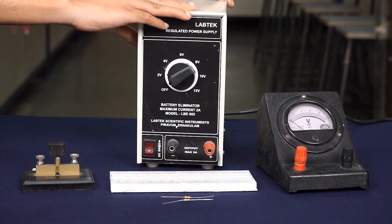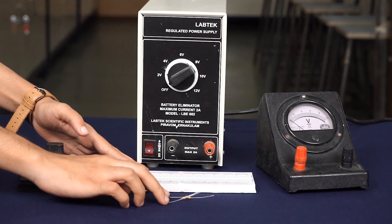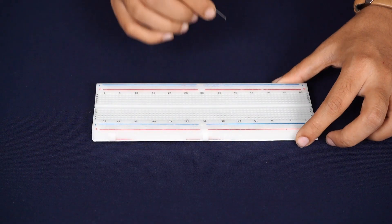Arrange cell, key, carbon resistors of 10 kilo ohm, and voltmeter as shown in the figure. Connect resistors in series.